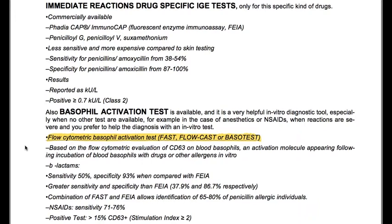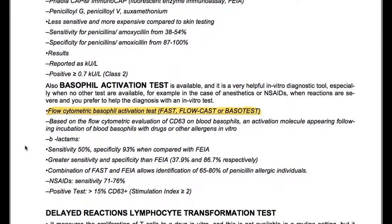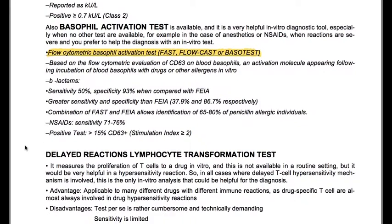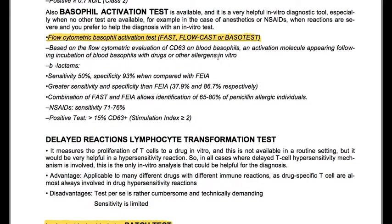Flow cytometric basophil activation tests — such as FAST, Flowcast, or Basotest — are based on flow cytometric evaluation of CD63 on blood basophils, an activation molecule appearing following incubation of blood basophils with drugs or other allergens in vitro. For beta-lactams the sensitivity is 50% and specificity is 93% compared to challenge.